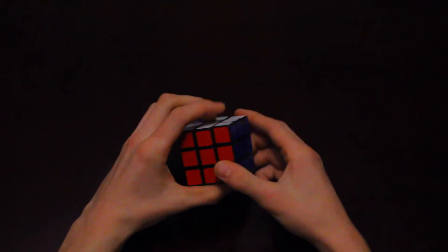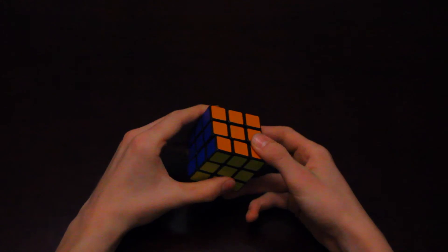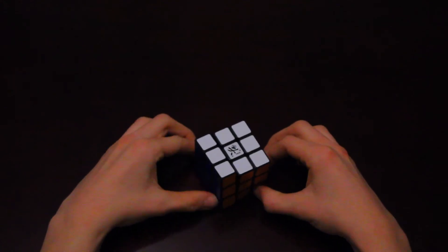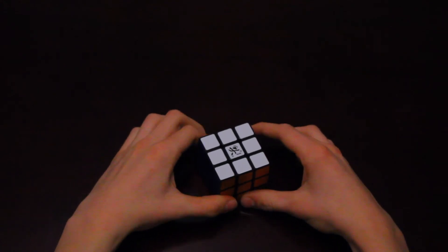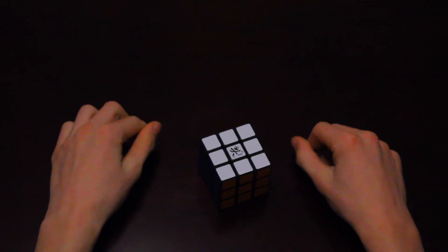And there you go. Now your cube should be solved from the pattern. That was the Pons Asinorum Rubik's Cube pattern, or six chessboards, if you want to call it that.